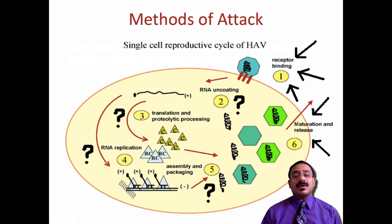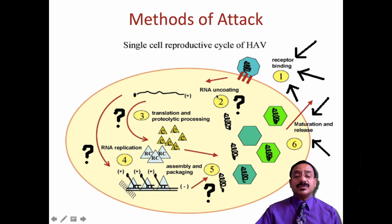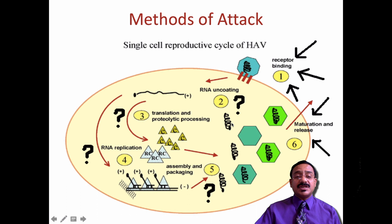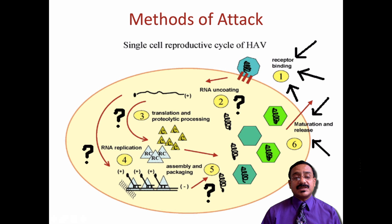The methods of attack: the first and foremost thing for a virus is to find a suitable receptor in the eukaryotic cell. Once they bind, they inject their DNA and uncoating occurs — whether it's RNA or DNA. Then this RNA goes on to translation and proteolytic processing, ultimately producing early proteins. These early proteins code for new nucleic acids; late proteins come at the later stage during assembly.